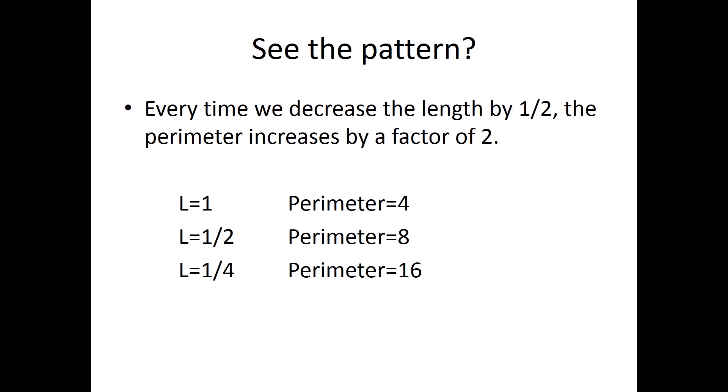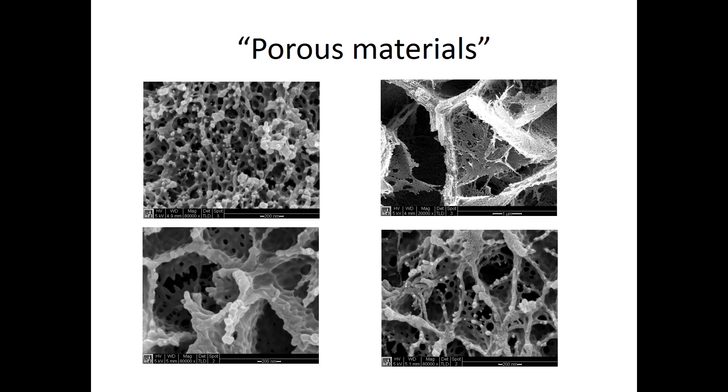By introducing pores in a material, it makes it like a sponge. It is similar to cutting billions of windows just like our example. The result is an enormous surface area in a very small space. Here are some examples of porous material images taken using a scanning electron microscope. These pores are about 50 nanometers in size, which is 2,000 times smaller than the thickness of a sheet of paper.